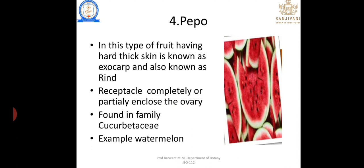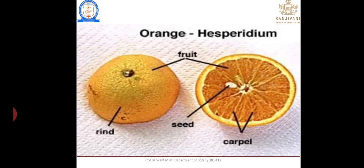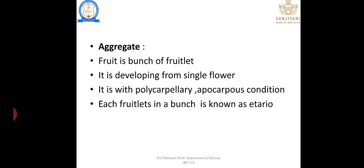Pepo — this type of fruit has a hard thick skin known as exocarp or rind; the receptacle completely or partially encloses the ovary; found in family Cucurbitaceae; example — watermelon. Hesperidium — derived from a polycarpellary multilocular superior ovary; seeds arranged on axile placentation; fleshy fruit with a hard leathery pericarp; example — orange.